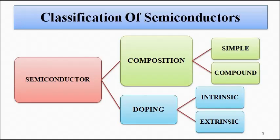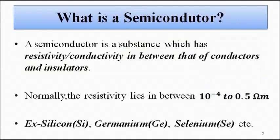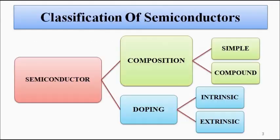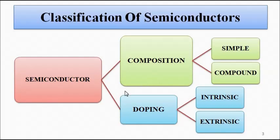Classification of semiconductors is done on the basis of two aspects. First, composition: simple or elemental semiconductors consist of a single element such as silicon or germanium, with silicon being the popular choice. Compound semiconductors consist of two or more elements — gallium arsenide, indium phosphide, aluminium gallium nitride, and so on. Today's video is based on the second aspect: doping.